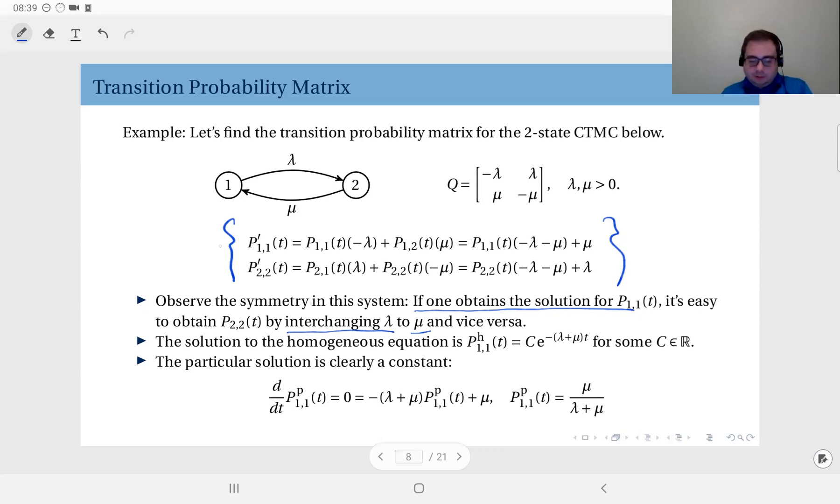Now, this is the equation. P11 derivative equals this function, P11(t) times minus lambda minus mu plus mu. So this is a simple differential equation, but it's not homogeneous. You have this mu term here, which makes it inhomogeneous.